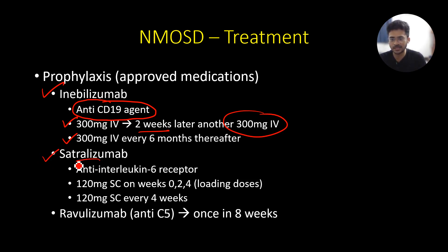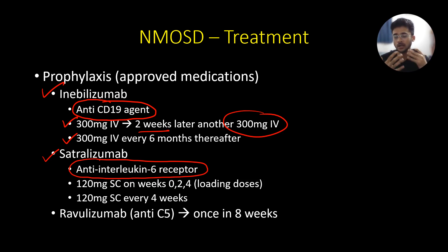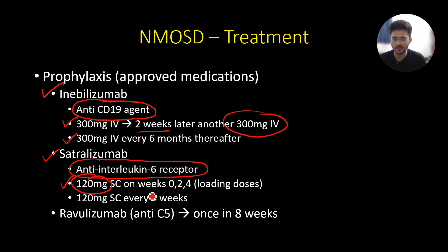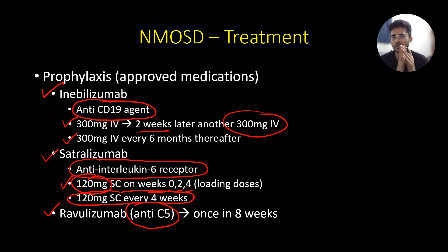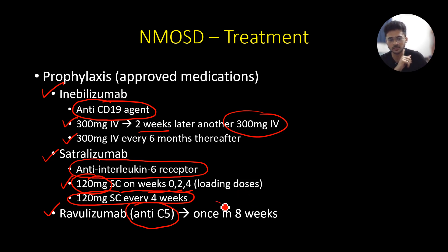The third drug is satralizumab, an anti-interleukin-6 receptor antibody. It is given at a loading dose of 120 mg subcutaneously on weeks 0, 2, and 4, then 120 mg subcutaneously every 4 weeks. The fourth and most recently FDA-approved drug is ravulizumab, also an anti-C5 agent like eculizumab, but with a longer duration of action — it only needs to be given once every 8 weeks instead of every 2 weeks.